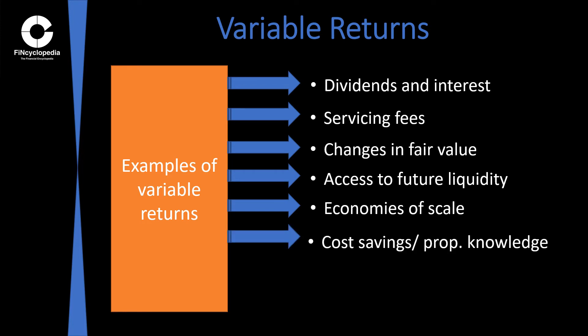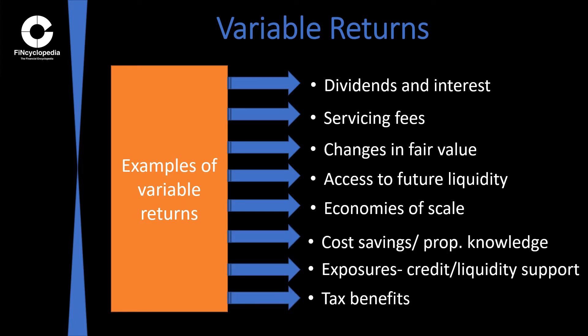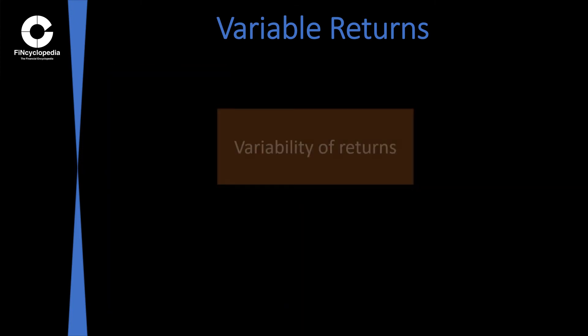Tax benefits and other similar items are also examples. In accounting, variability is determined based on the substance of an arrangement regardless of its legal form.